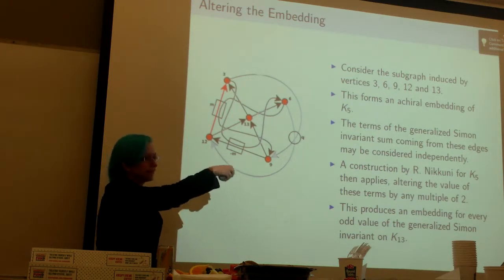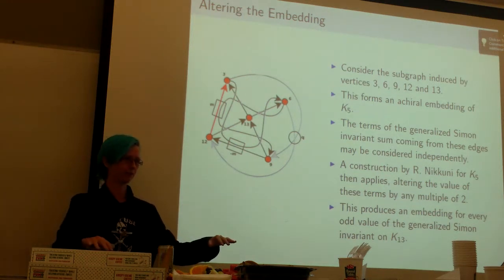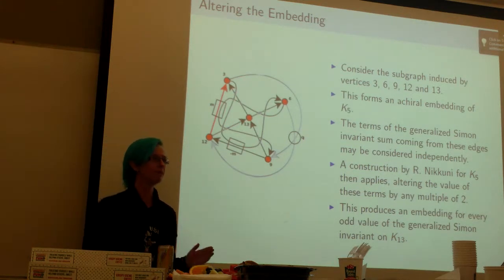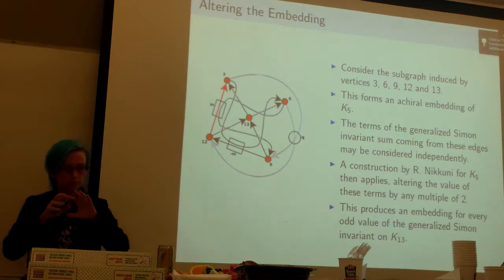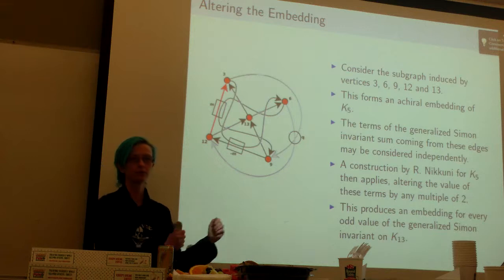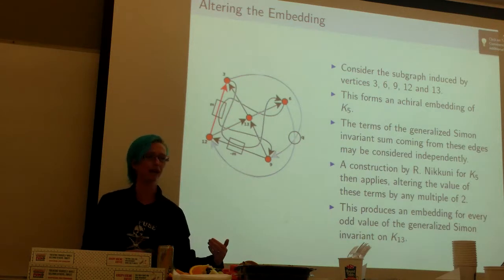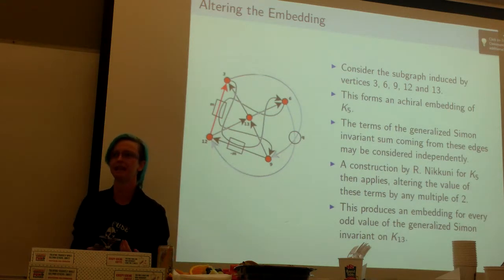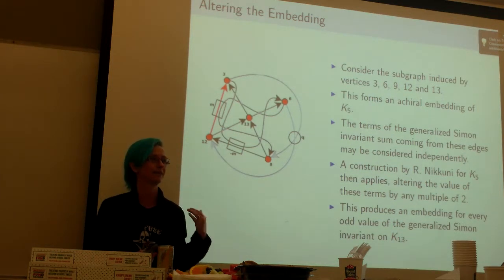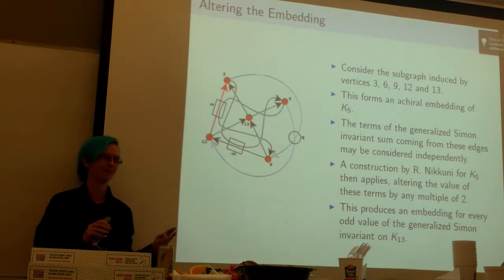Then when you switch this one right here, it changes it by 2, so you get the other half of the odd numbers. By doing this on the subgraph, since the Simon invariant is just a sum, you can sort of shift those terms over that have to do with the subgraph and alter those without altering the whole rest of the invariant. So this construction actually applies to being able to get a value for each of these for the extended Simon invariant on K13. And that means that we can create an embedding with every value.